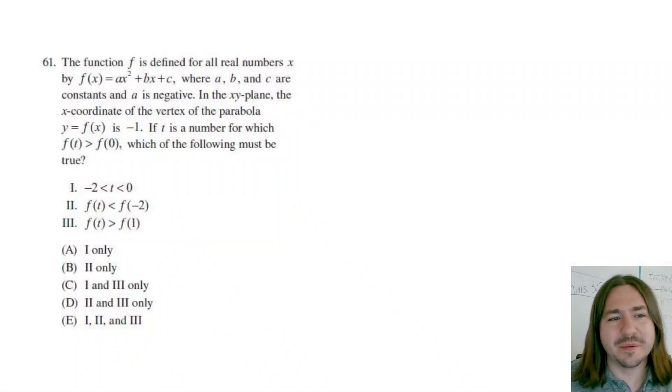Hey y'all, welcome back. Number 61 says the function f is defined for all real numbers x by this generic quadratic function, ax squared plus bx plus c, where a, b, and c are constants. So these are the coefficients and the constant c, and a is negative.